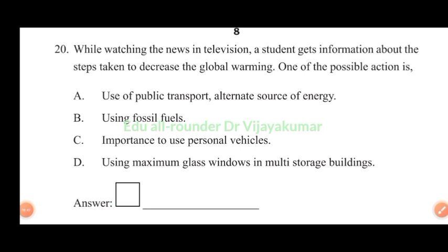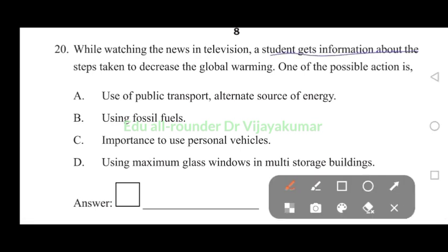While watching the news on television, a student gets information about the steps taken to decrease the global warming. Use of public transport, alternate source of energy - using public transport reduces air pollution and global warming. Answer A is the right answer.